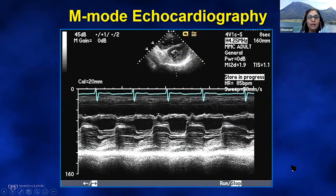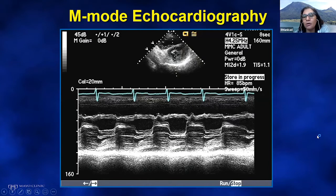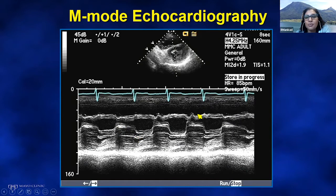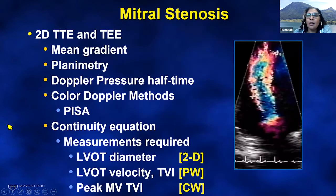Classically, before we had 2D, M-mode was the way the diagnosis was made. On M-mode echocardiography, we see that the mitral valve anterior leaflet has lost its normal E wave and A wave pattern — even in sinus rhythm — with a thickened leaflet and flattening of the E and A, producing a singular slope, and reduced valve opening. Nowadays we are looking at gradients and valve area by 2D methods, transthoracically and by TEE.